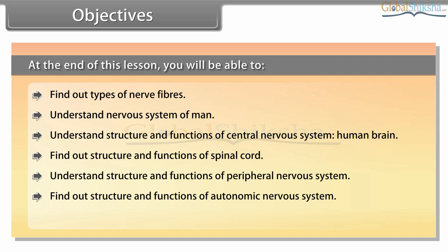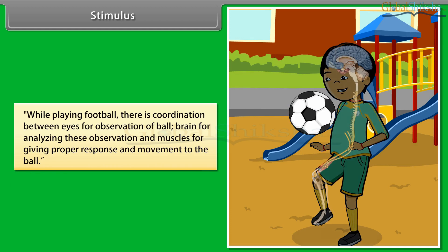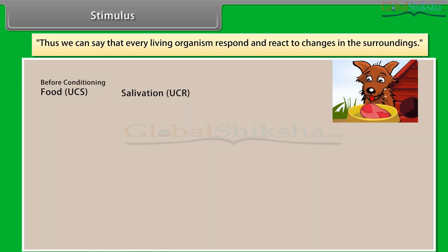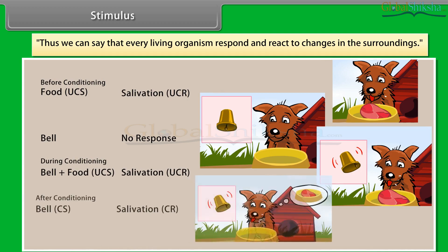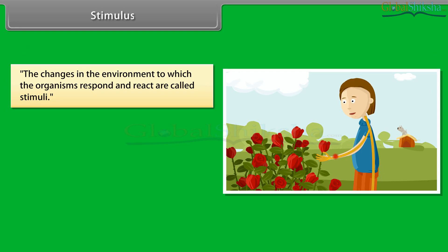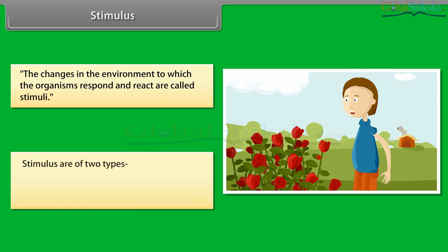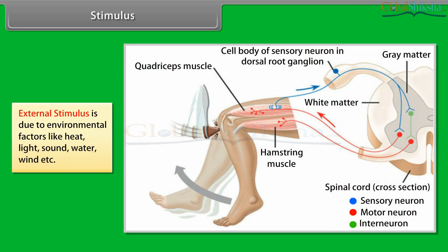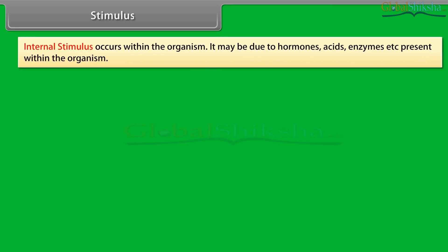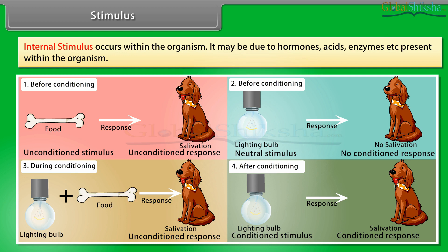While playing football, there is coordination between eyes for observation of the ball, the brain for analysing these observations, and muscles for giving proper response and movement to the ball. Every living organism responds and reacts to changes in the surroundings. The changes in the environment to which organisms respond are called stimuli. Stimuli are of two types: external stimulus, due to environmental factors like heat, light, sound, water, wind, etc., and internal stimulus, which occurs within the organism due to hormones, acids, enzymes, etc.